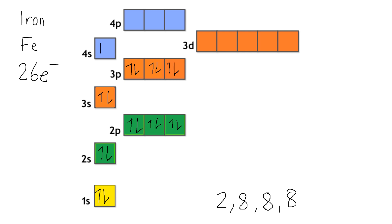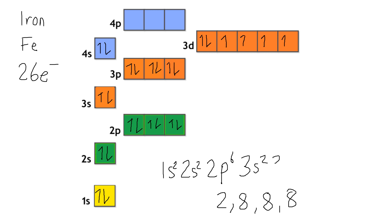Then the 4s — that's 20 — and that leaves us with 6 electrons left to go in the 3d. We put one in each box, and then we can start going back and double filling with the opposite spin. So its configuration written out as SPD notation would be 1s2, 2s2, 2p6, 3s2, 3p6, 4s2, 3d6.